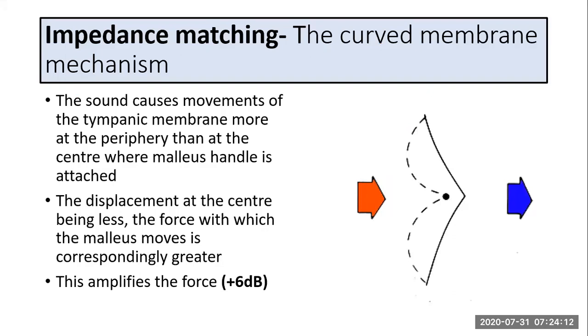The third mechanism is the curved membrane mechanism, which also increases sound pressure at the oval window. The tympanic membrane is rigidly fixed near its rim and hangs loosely like a tent. The sound causes movements of the tympanic membrane at the periphery more than at the center where the handle of malleus is attached. The displacement at the center being less, the force with which the malleus moves is correspondingly greater. This amplifies the force. The curved membrane mechanism amplifies the force of the impinging sound by about plus 6 decibels.